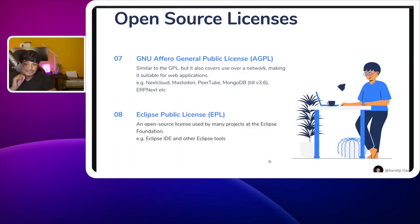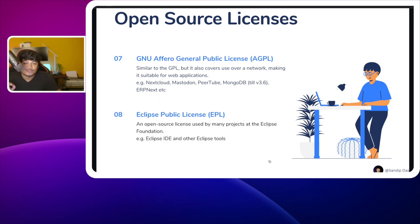The seventh license is the GNU Affero General Public License, or AGPL. It is similar to the GPL but also covers use over a network, making it suitable for web applications. Examples include Nextcloud, Mastodon, PeerTube, MongoDB until version 3.6, and ERPNext.